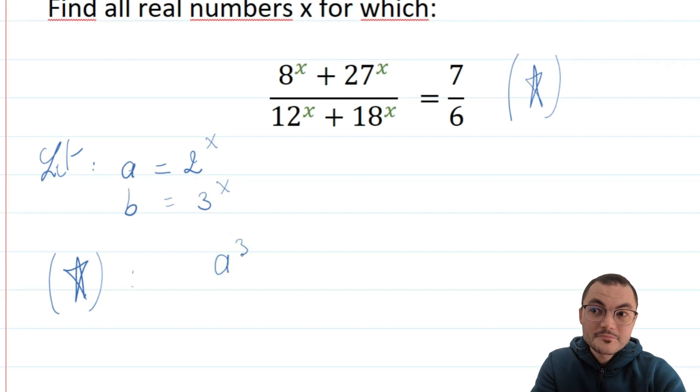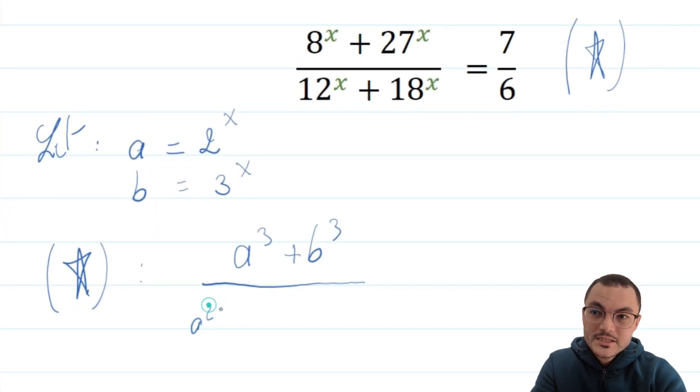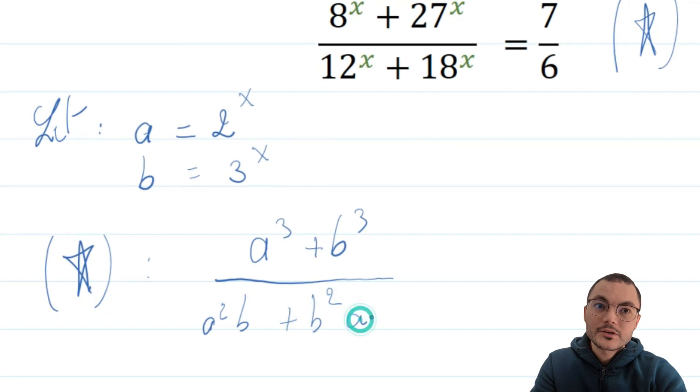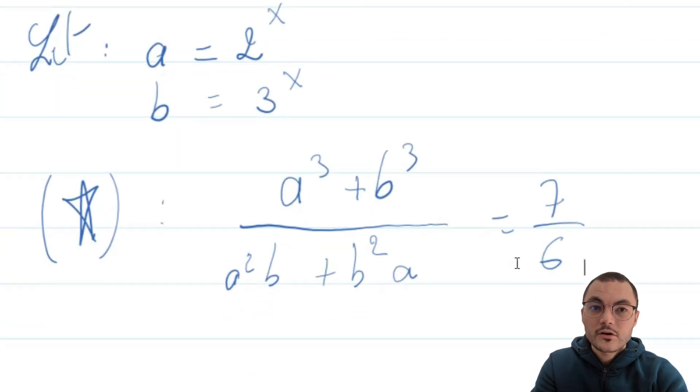Our initial equation rewrites as a to the power of 3 plus b to the power of 3 over a to the power of 2 times b plus b to the power of 2 times a equal to 7 over 6.